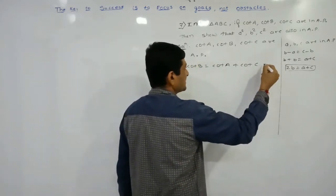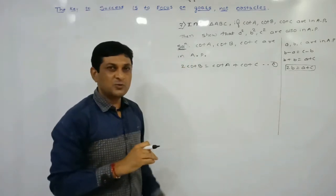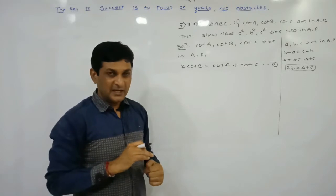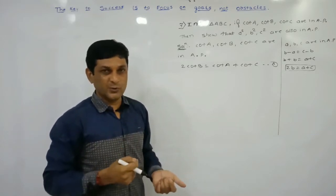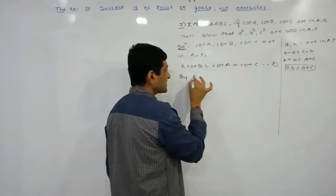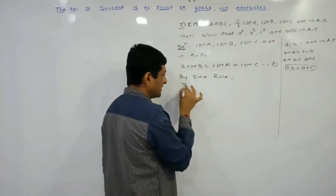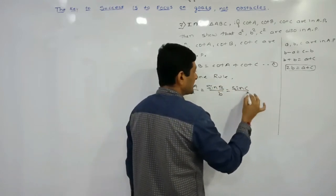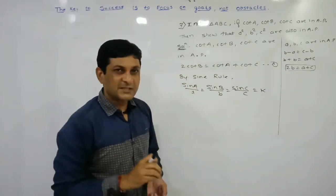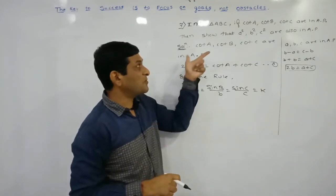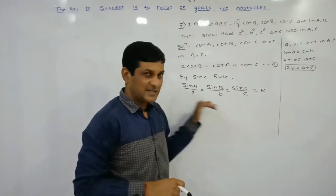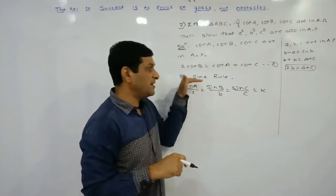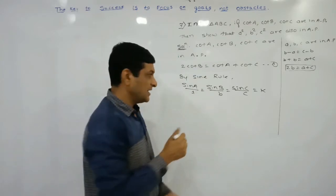To solve this example we have to convert the trigonometric equation in terms of a, b, c, because the required result is in terms of a, b, c. To do this we apply the sine rule and cosine rule. By sine rule: sin A / a = sin B / b = sin C / c = k. If we need to convert trigonometric functions in terms of a, b, c, write a, b, c in the denominator.